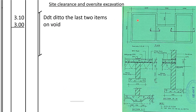Then we shall go to the site. Remember here we have a void which we need to deduct. We have taken this length and the width for site clearance, and now we need to deduct for the void. The void length is 3,500 minus 400 for the two spreads of 200 each, giving 3,100, so the length is 3.1. The width from outside wall to outside wall is 3,000; deducting 200 and adding 200 it remains 3,000. So we deduct 3.1 by 3.0 for the void.